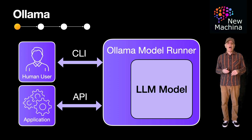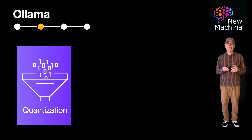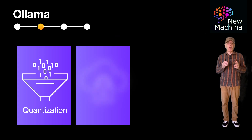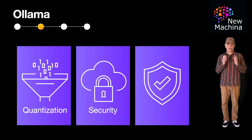Ollama optimizes model performance using quantization, allowing efficient execution on consumer laptops or desktops. It enables offline and private AI usage, ensuring that data remains on your device for security and privacy.